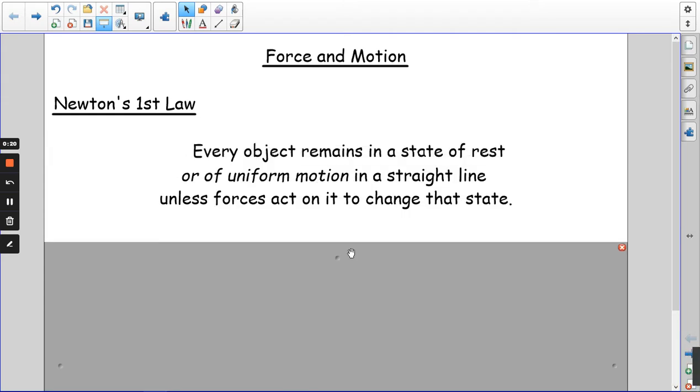Newton's first law says that every object remains in a state of rest or uniform motion in a straight line unless forces act on it to change that state. If something is moving it will continue to move at a constant velocity, or if something is stopped it will stay stopped. Another word for that is equilibrium. Things will stay in equilibrium unless they're acted on by a force. It seems obvious, but at the time that was quite groundbreaking.